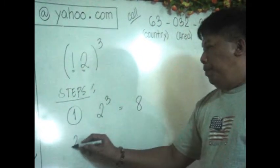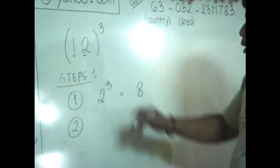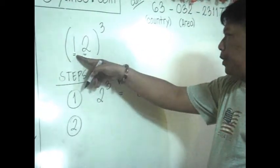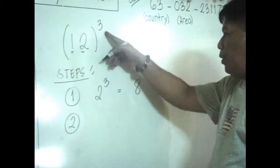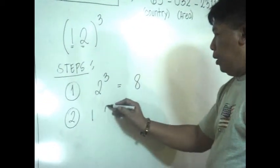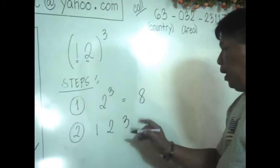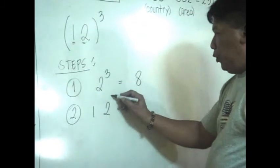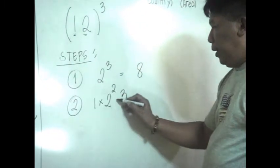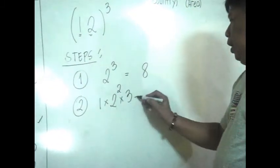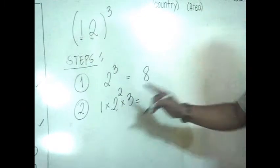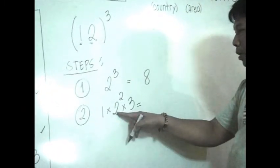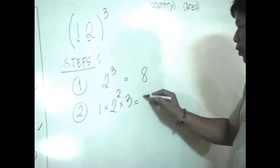Step 2: write the three numbers — the first digit (1), the second digit (2), and the power (3). We square the second term: 2² = 4. Then multiply: 1 × 4 × 3 = 12.